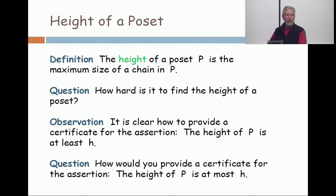You just simply provide the chain. But how would you provide a certificate for the assertion that the height of P is at most H? If I give you a big poset, a thousand points, and somebody stands up and says the height of this is at most 23, and they're challenged, based on just the definitions, how would they defend that answer? From basic principles they would be left with: well, I couldn't find a longer one and you can't either. That's not very convincing, is it? All right, we'll come back to that.